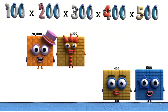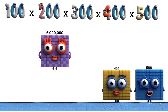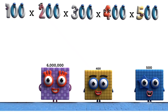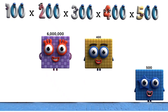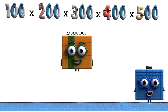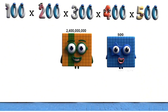20,000 times 300 equals 6,000,000. 6,000,000 times 400 equals 2,000,000,000.